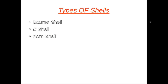Different people implemented the interpreter functions of the shell in different ways. This gave rise to various types of shell, the most prominent of which are the Bourne shell, the C shell, and the Korn shell.